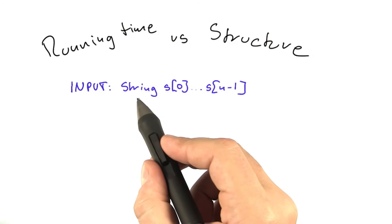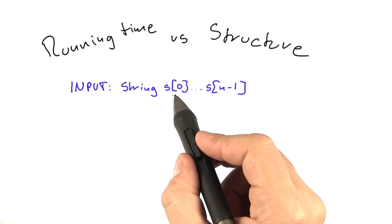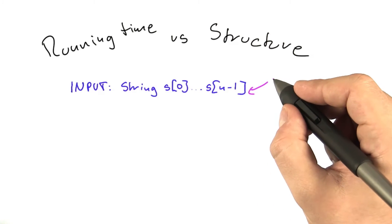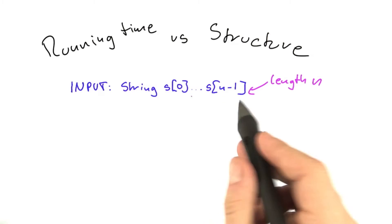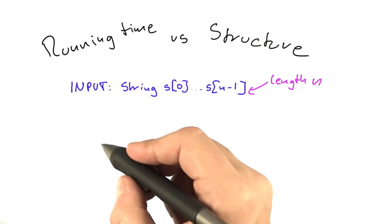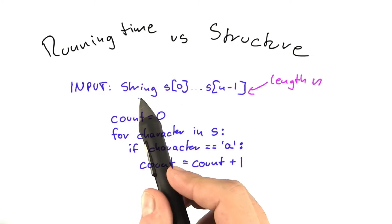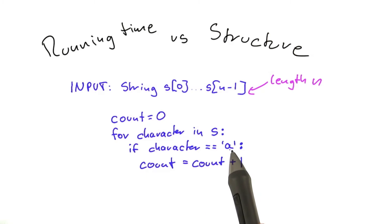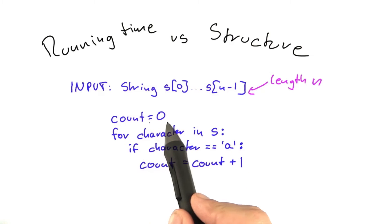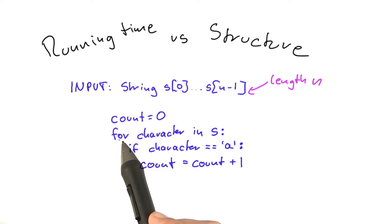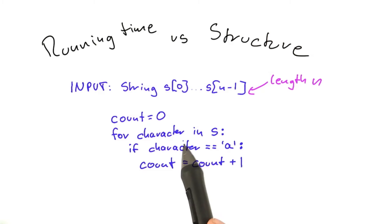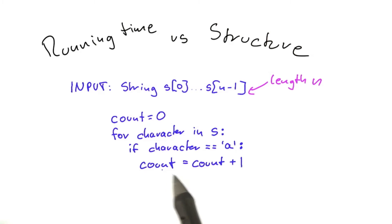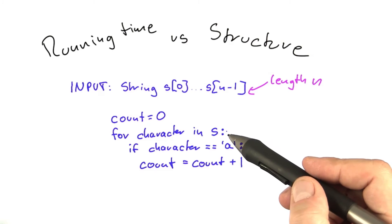The algorithm takes as input a string s0 to s_{n-1}, which means it's a string of length n — so n characters in the string. The algorithm does something very simple: given that string, it counts the number of times that the character 'a' appears in that string. It sets the counter to 0, then goes through all the characters in the string one by one, and if that character is equal to 'a', it will increase the counter.